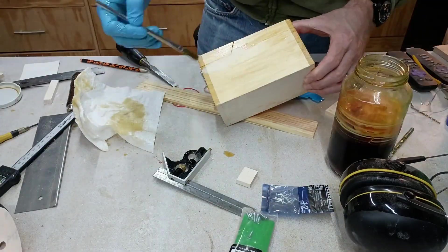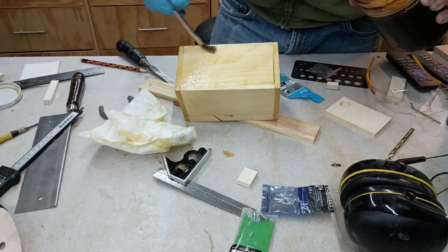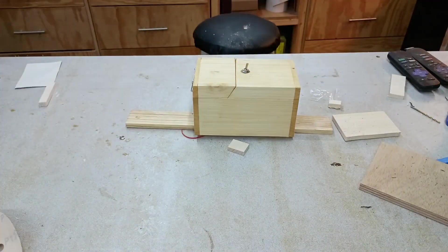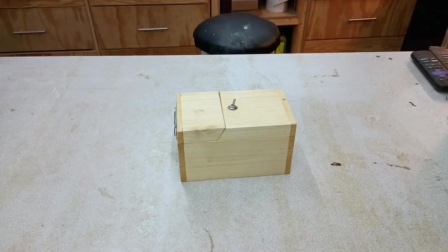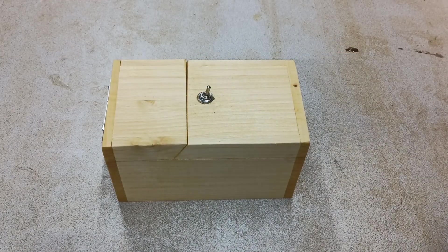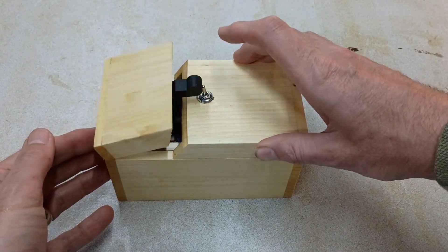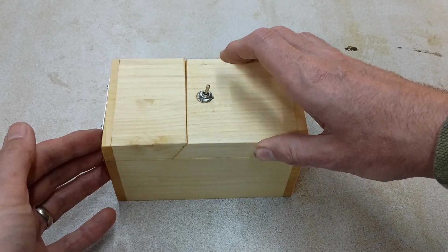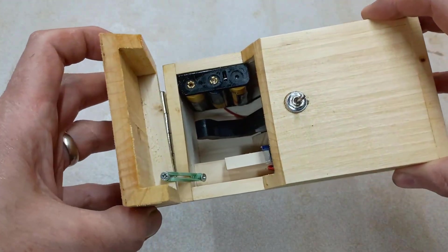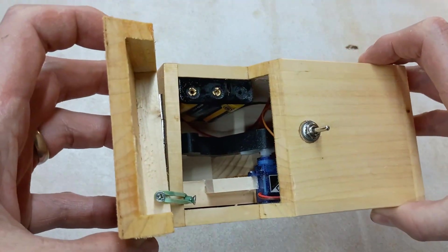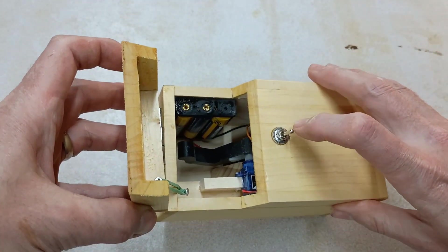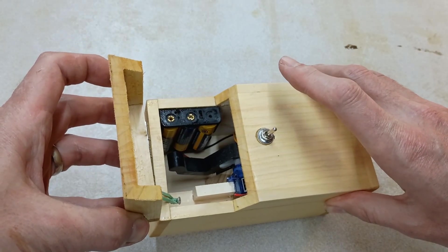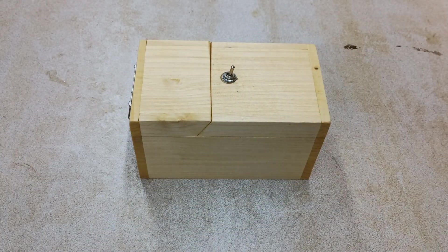Final step I decided to put some true oil on this, just for a little bit of protection. After that dried I sanded it with 400 grit as well. Cleaned up the area and there we have it, the useless box. Give you a look on the inside there. That's it, hope you enjoyed.